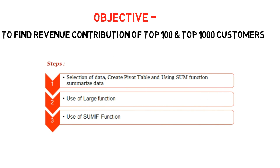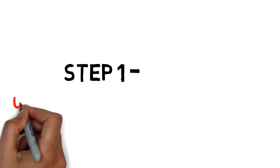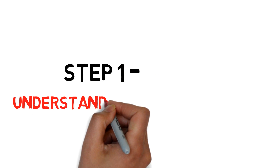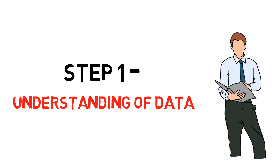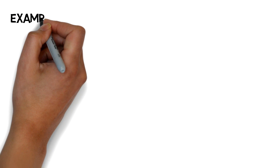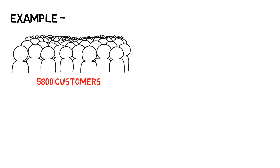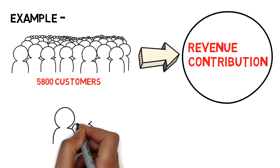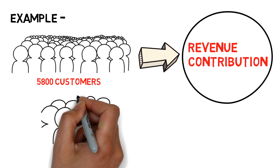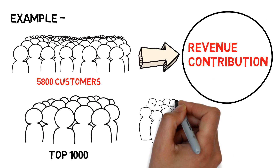The steps are as follows. The very first step is understanding of data. For example, you have 5800 customers and you want to find revenue contribution from top 1000 customers and top 100 customers.